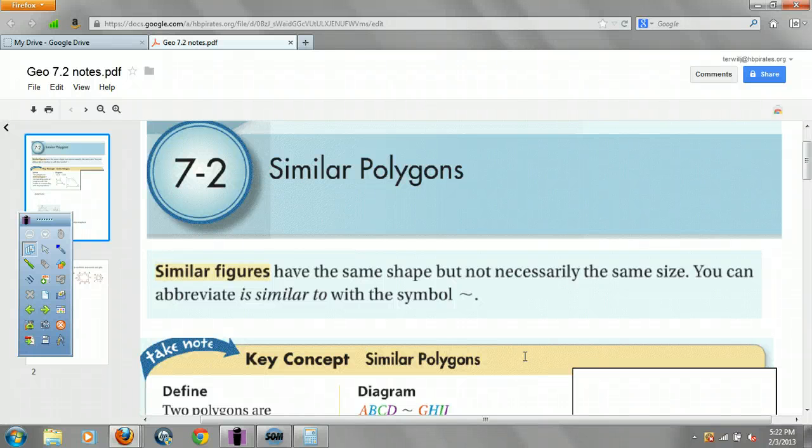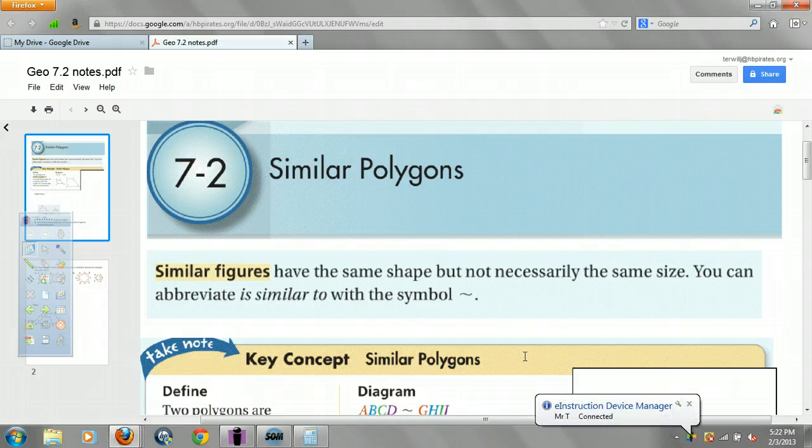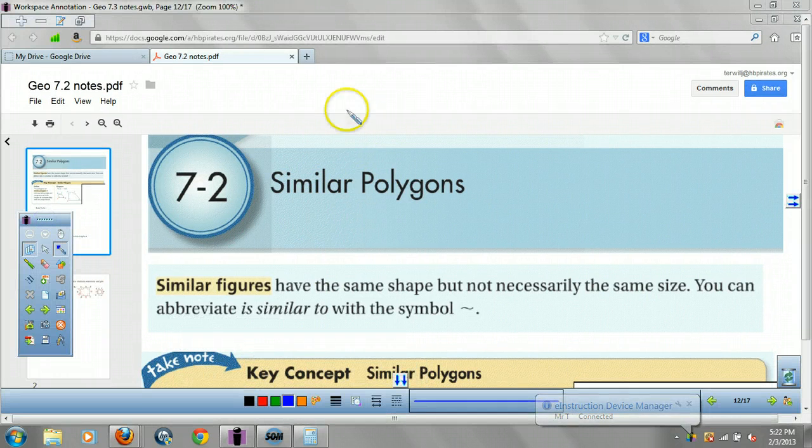How's it going, you Geometry Cats? Today we're going to look at 7-2 similar figures, or similar polygons. Similar figures, similar polygons. It's a tomato-tomato situation.